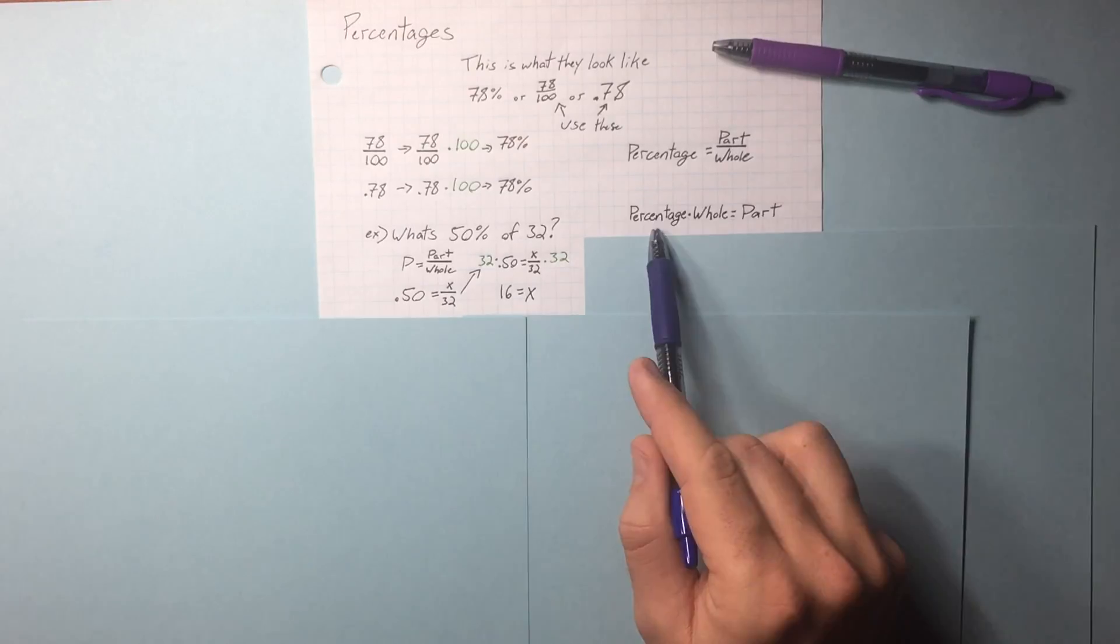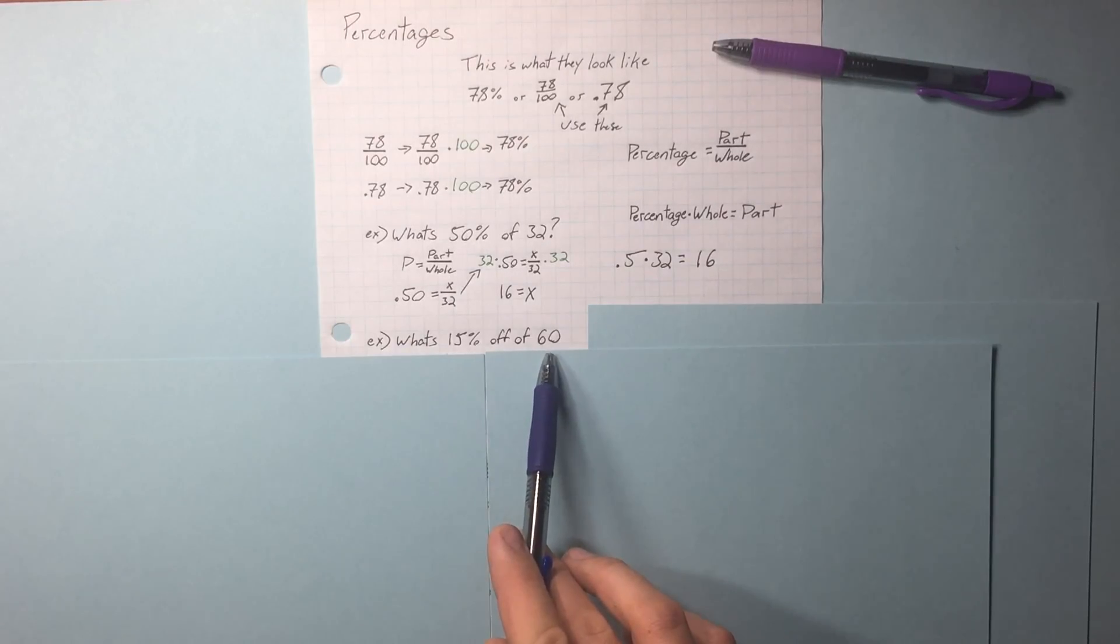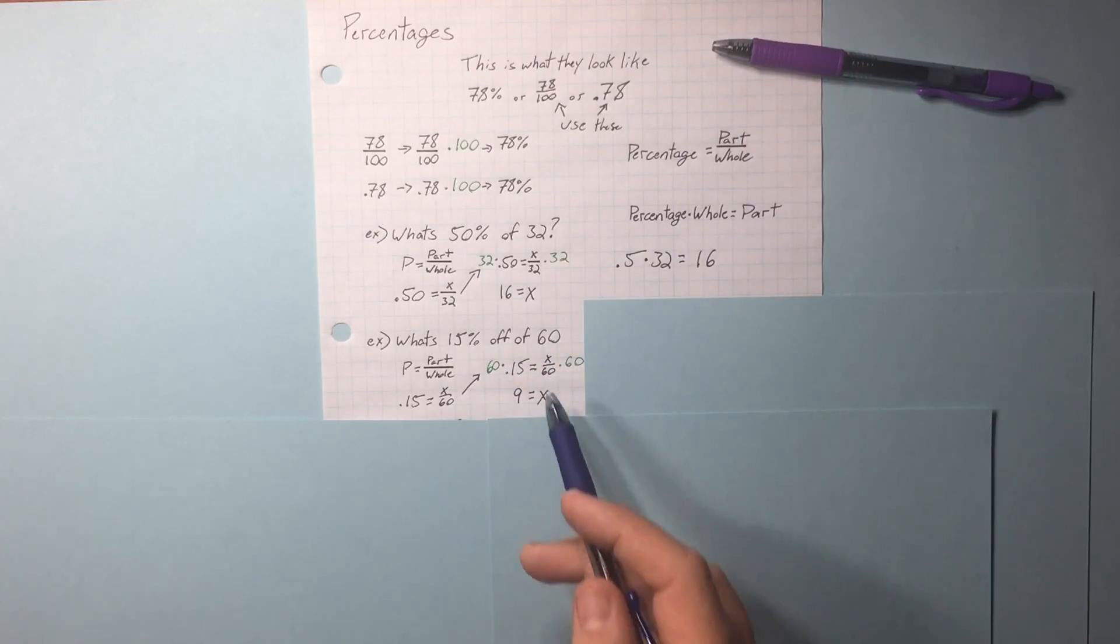Another way you can think about this problem: percentage times the whole will equal the part. What's 15% off of 60? First, we need to figure out what 15% of 60 is. Our percentage is 15, part over whole. Multiply both sides by 60. 15% of 60 is 9.